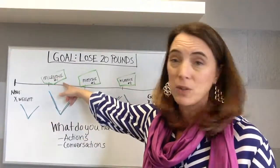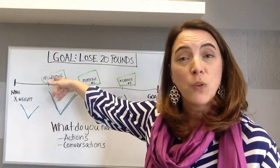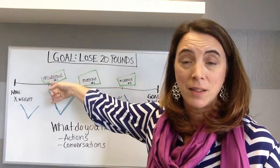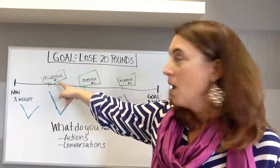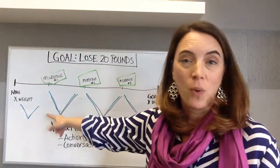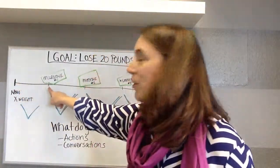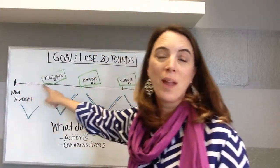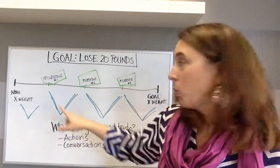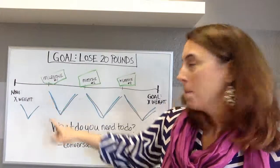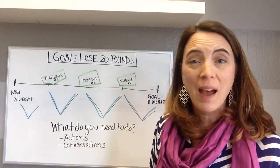So your first milestone is to lose five pounds, and if you want to put a timeline to it, you might say within two weeks. Then the question to ask yourself is: between now and the first milestone, what do you need to do to reach it? What actions do you need to take? What conversations do you need to have?